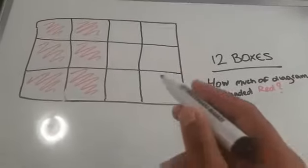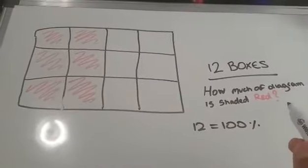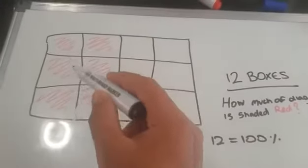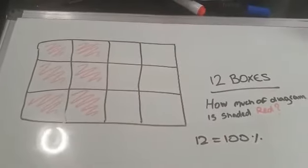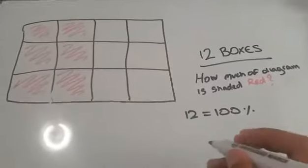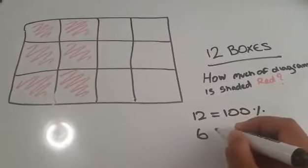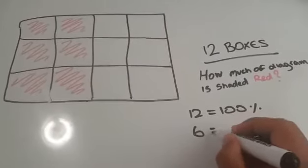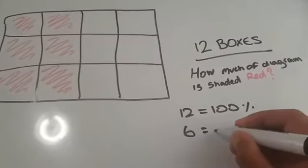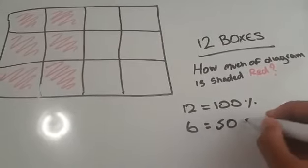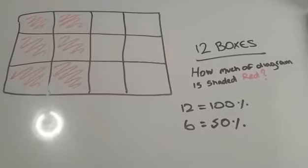Now, moving on, how much of the diagram is shaded red? If I count here, there should be 6. Well, if 6 is shaded red, and 6 is half of 12, then we know that 6 is also equal to 50%.